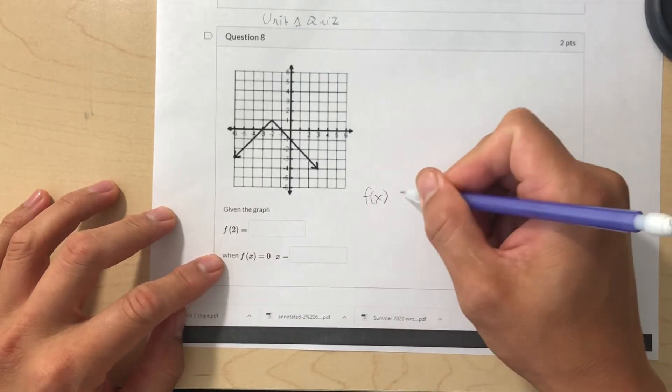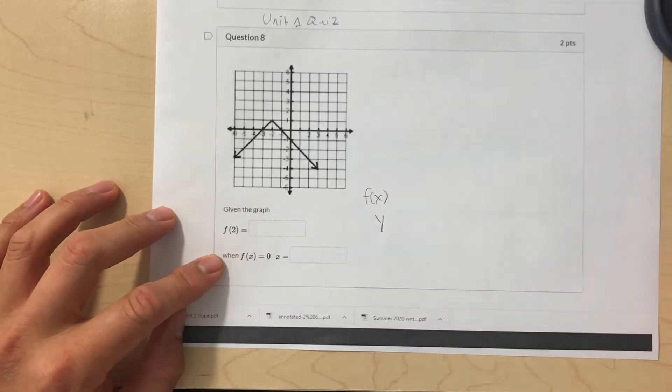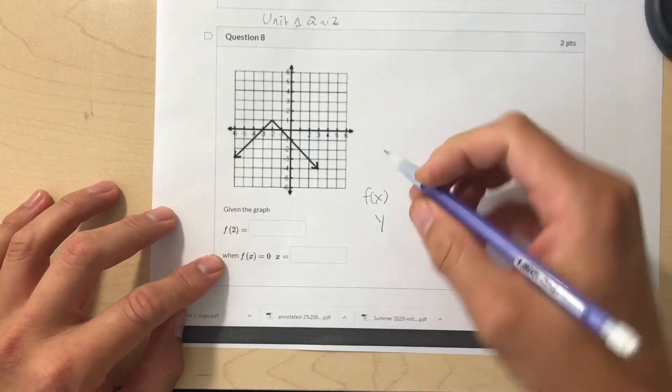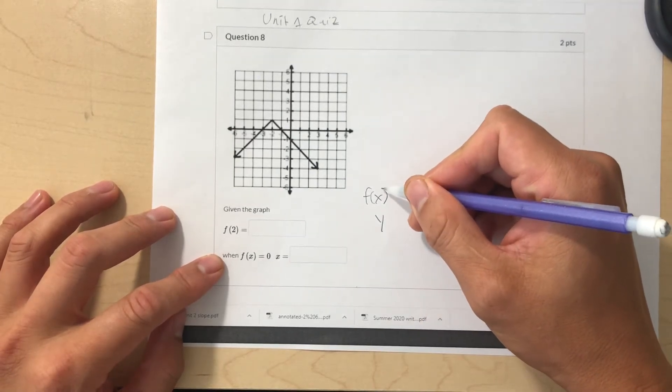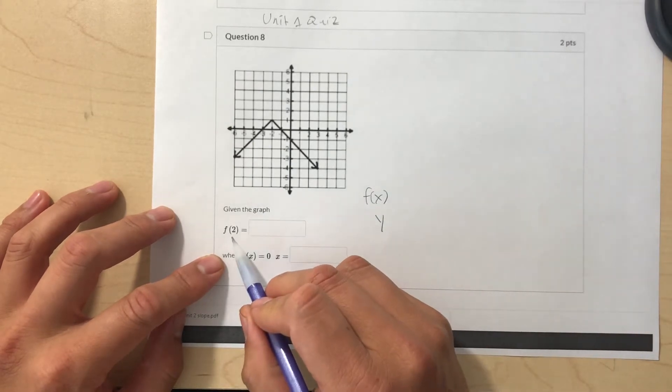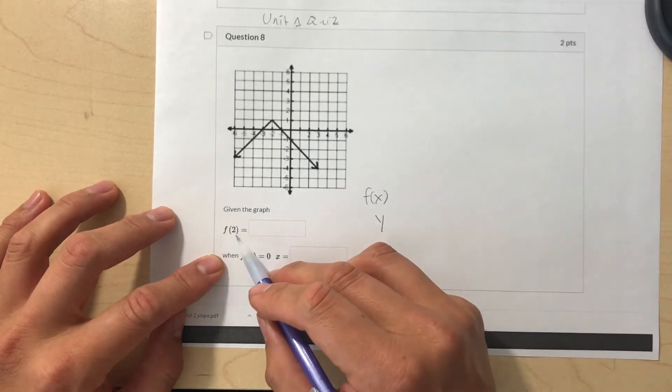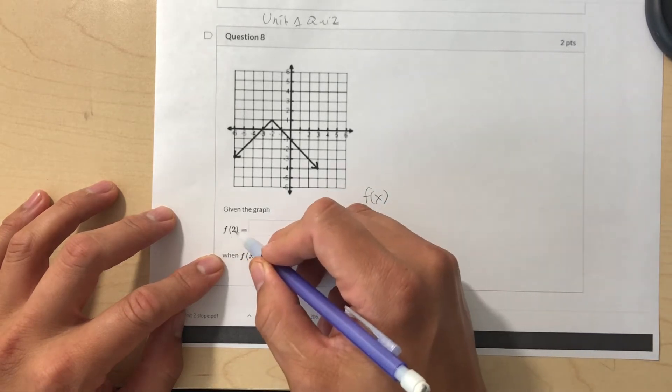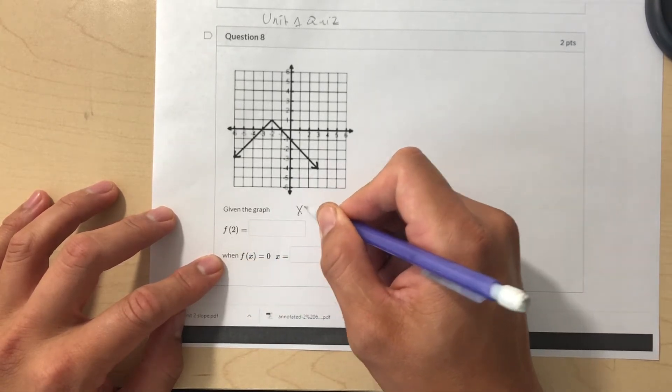Okay, so anyway you got to remember that f of x actually means the same thing as y. And this x here is just a number that can be plugged into the equation. So when you see something like this, this f of 2 here actually means that x is equal to 2.